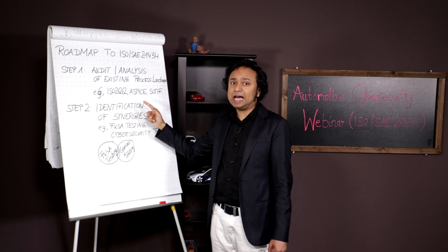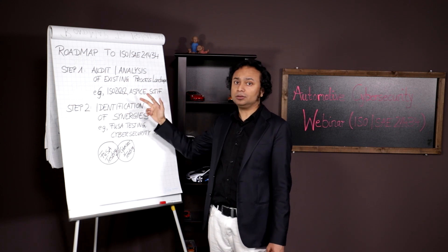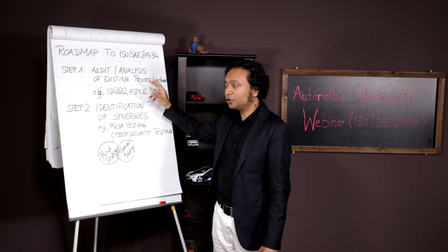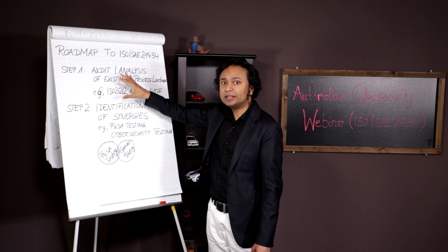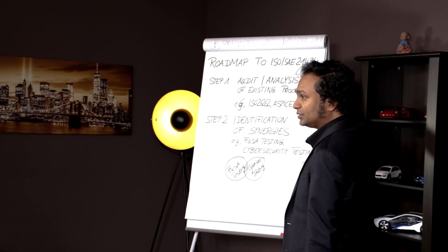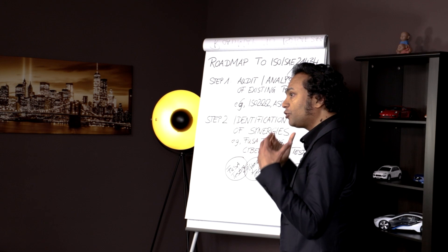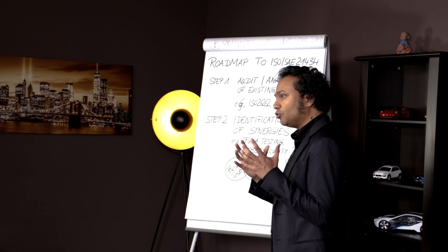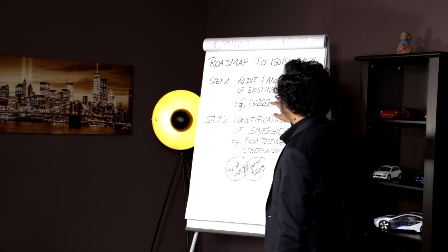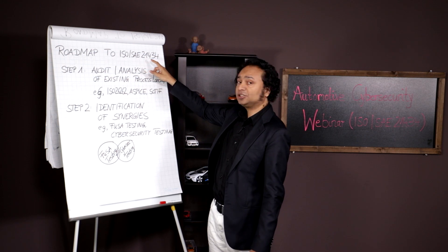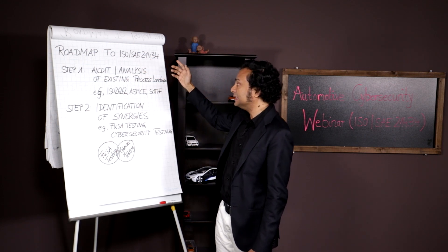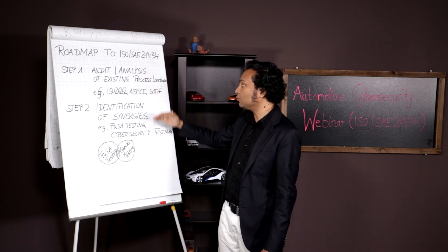So a gap analysis for the existing process landscape, that's the first step. A lot of people skip that and then they struggle. I would highly recommend you to start with a gap analysis of your existing process landscape. Of course, the point of view of this gap analysis is to find out the gap toward ISO 21434 compliance, but we've got to check the existing ones too.